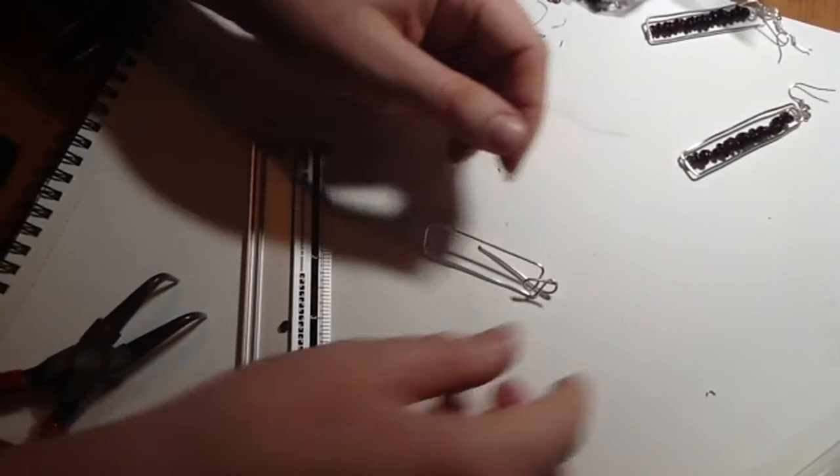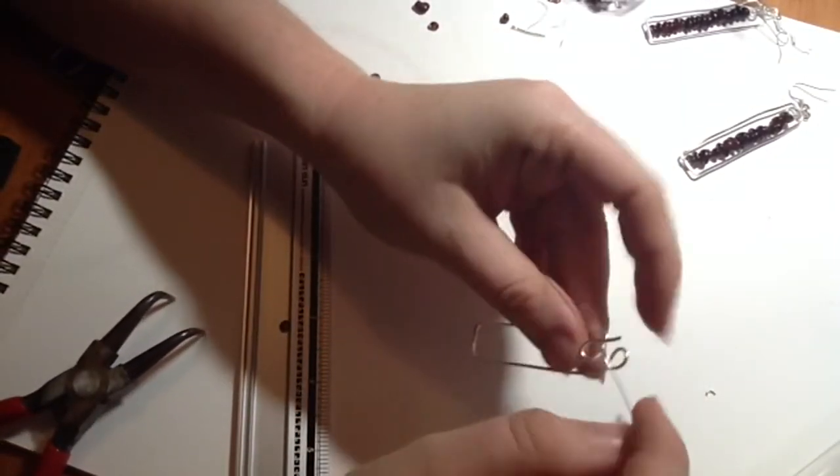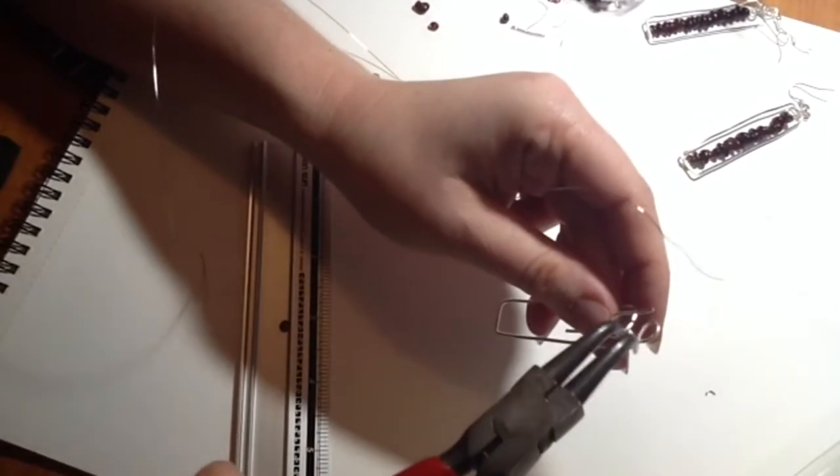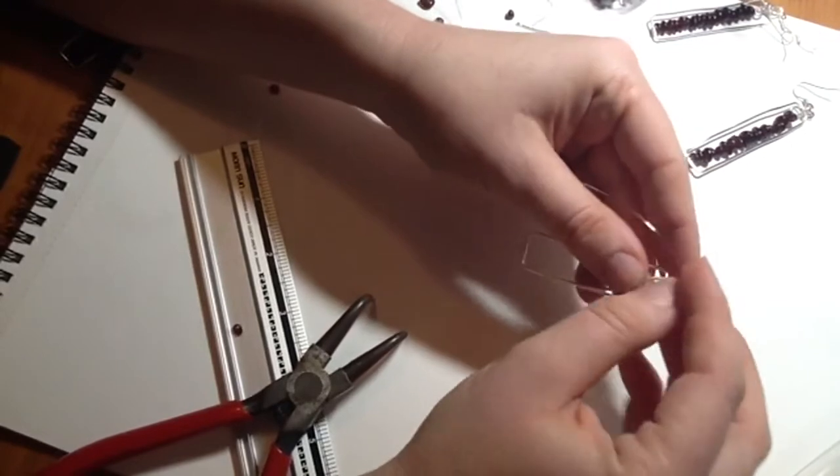So I'm going to use my 26 gauge wire to fuse these two together so that we do it without soldering. So we'll just push this one a little bit down so you can see how they're sort of fitting flush together there.